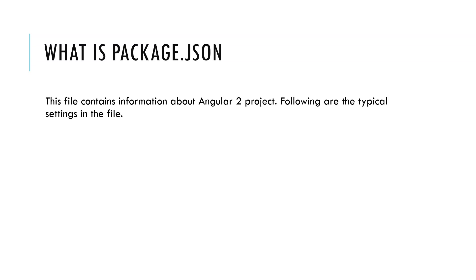What is Package.json? This file contains information about the Angular project. It includes settings such as what packages are installed, the different versions of those packages, and TypeScript and Angular information. NPM uses this information to identify and install the corresponding packages for the current application.